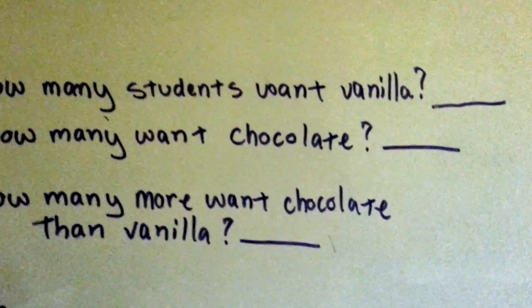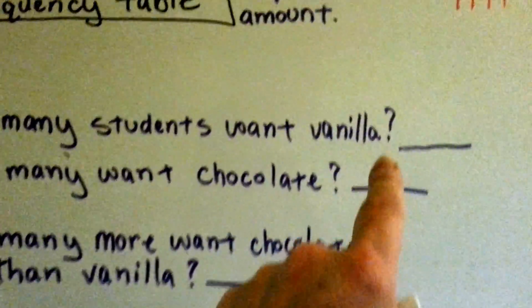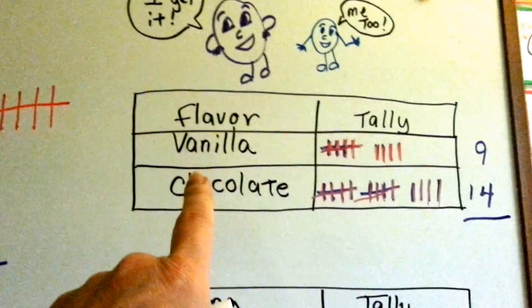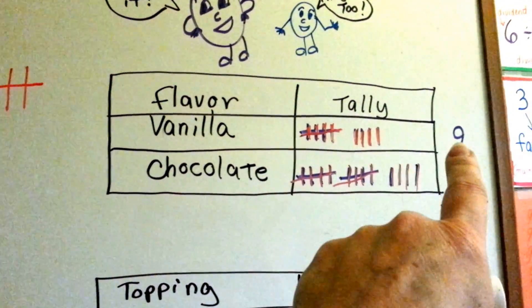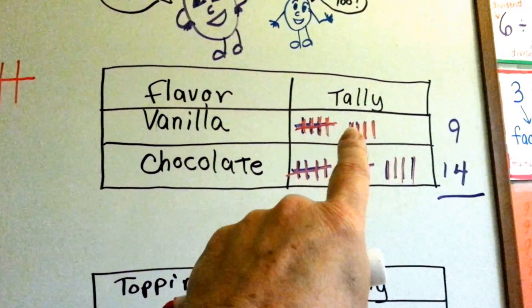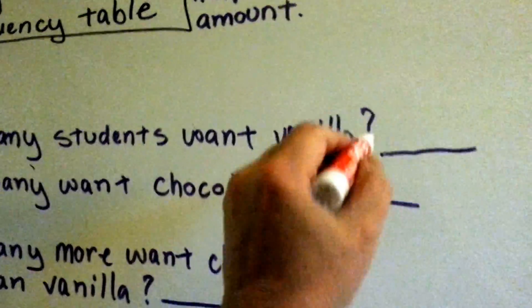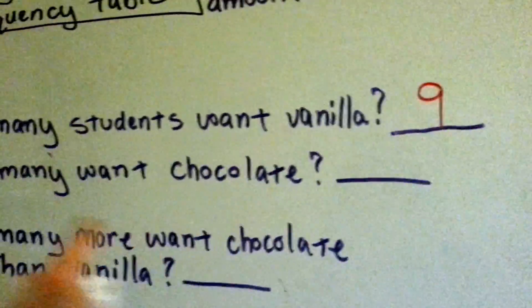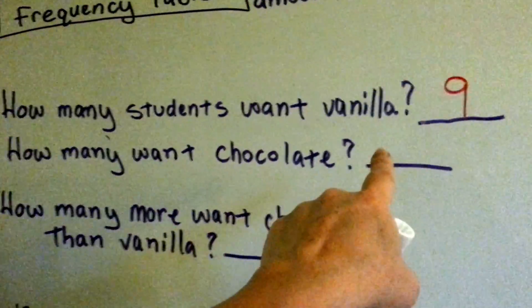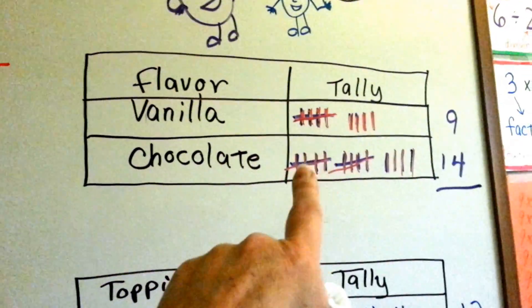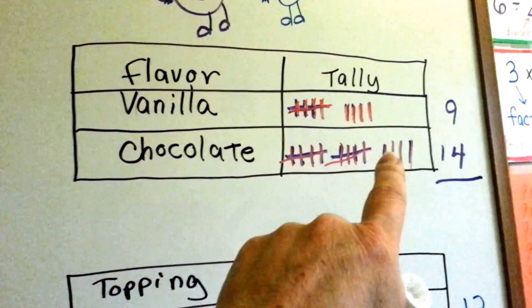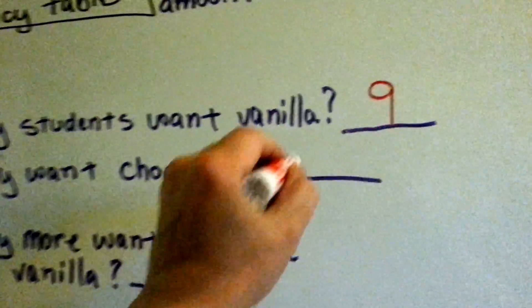So if we were to look at these questions, how many students wanted vanilla? How many students wanted vanilla? 9, 5, 6, 7, 8, 9. How many students want vanilla? 9. How many want chocolate? 5, 10, 11, 12, 13, 14. 14 of them wanted chocolate.